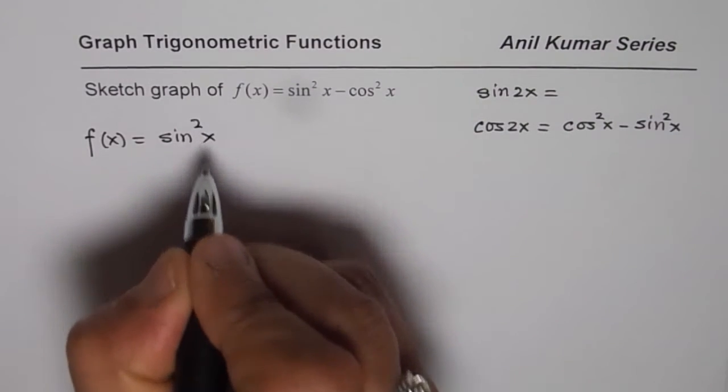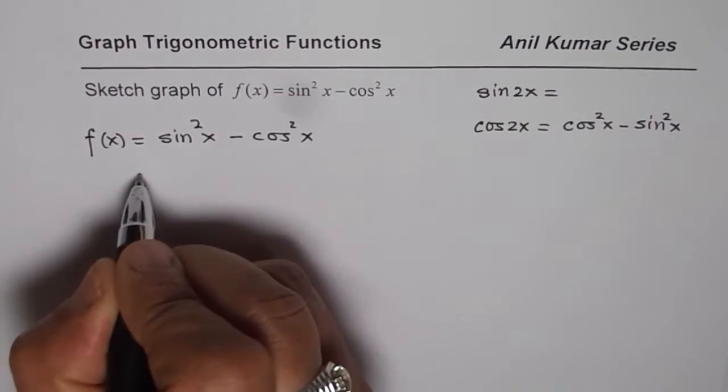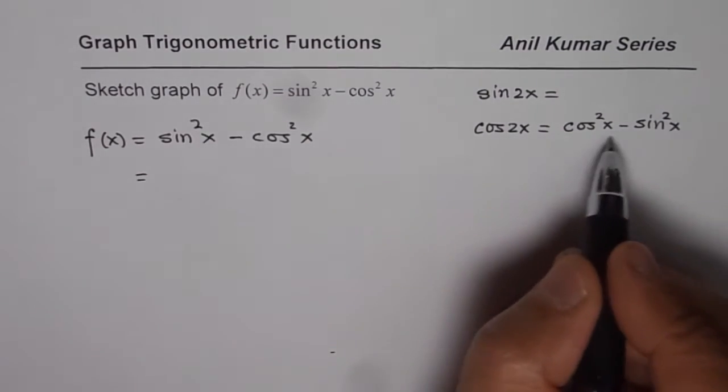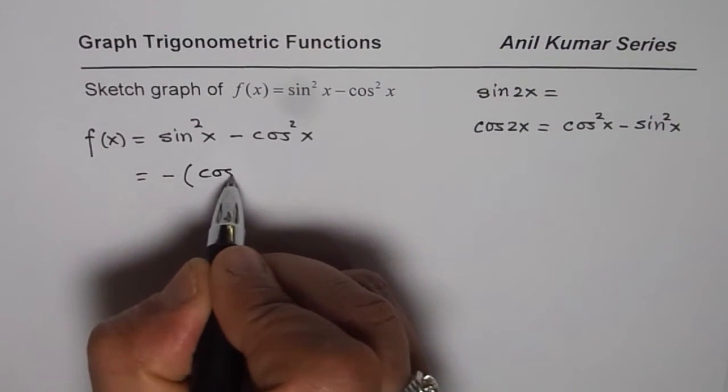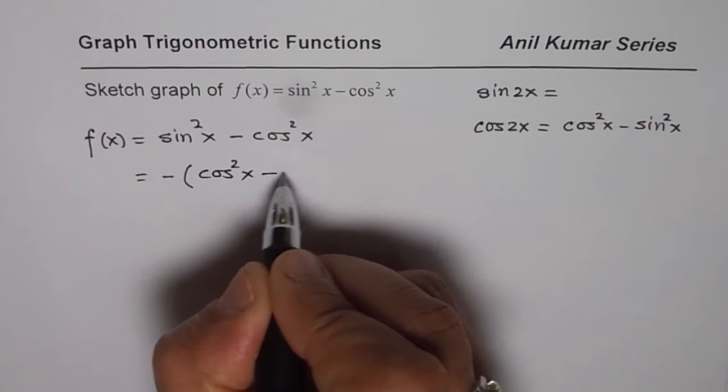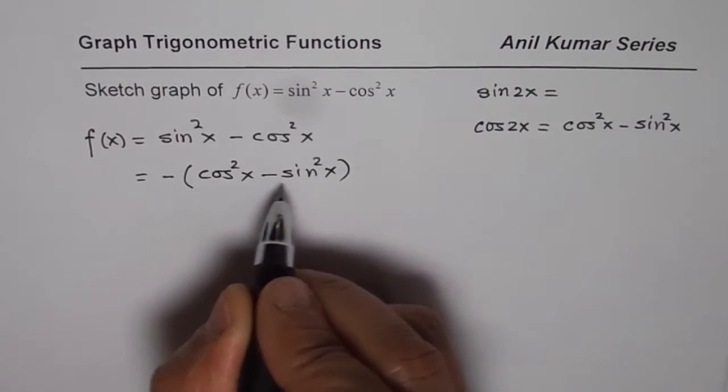What do we get? We get sin²x - cos²x - cos²x, which I want to write like this. So I'll take minus common and then we get cos²x - sin²x, and cos²x